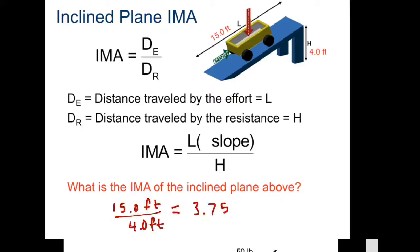What is the IMA of the inclined plane above? Well, that's just 3.75 because you do 15 divided by 4. It's pretty easy.